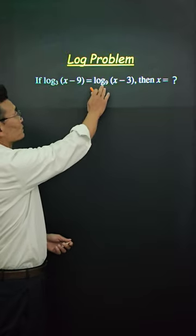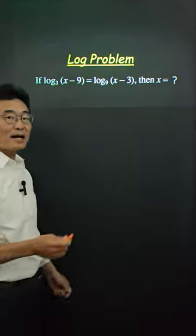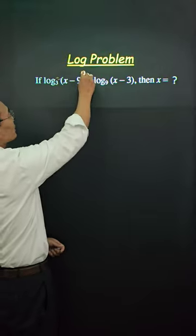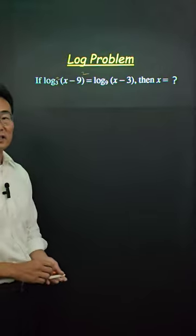In order to cross out the log on the left and the right, the bases on the left and the right have to be the same. So what I'm going to do is I'm going to square the 3, the base, and square the x minus 9 as well.